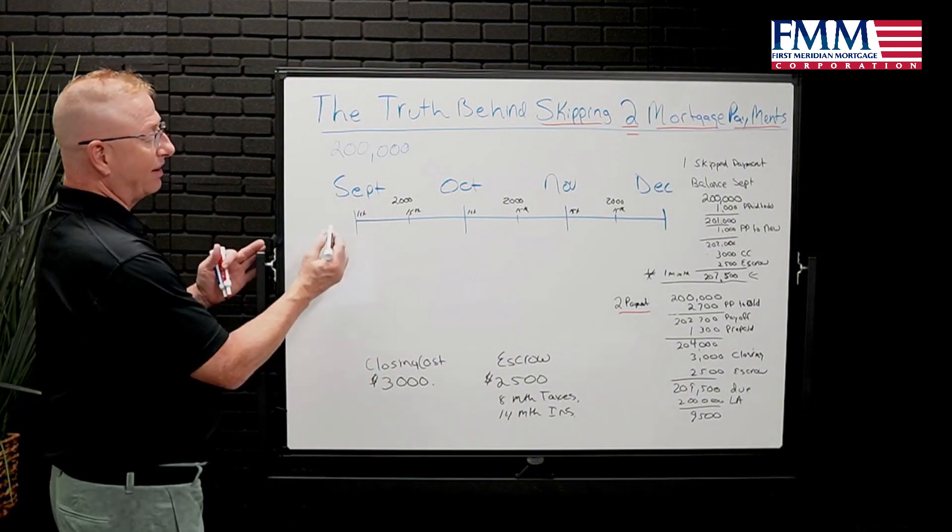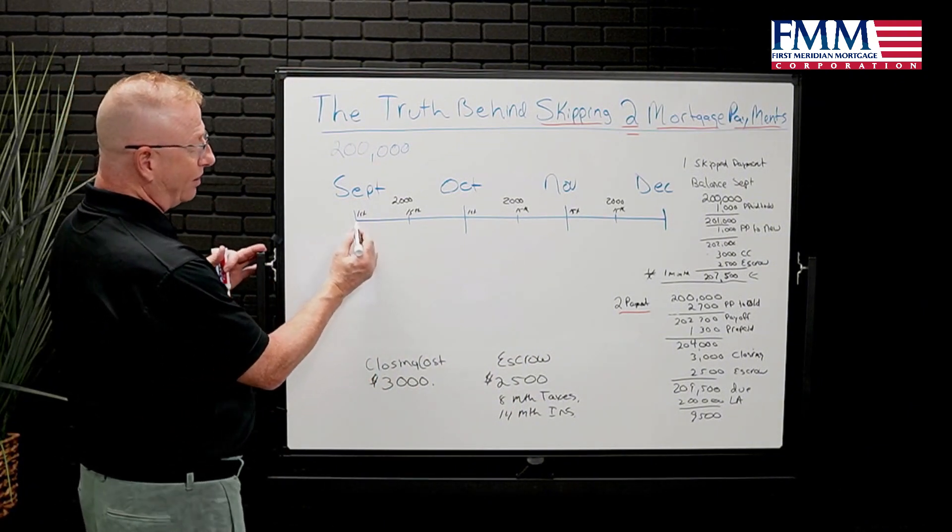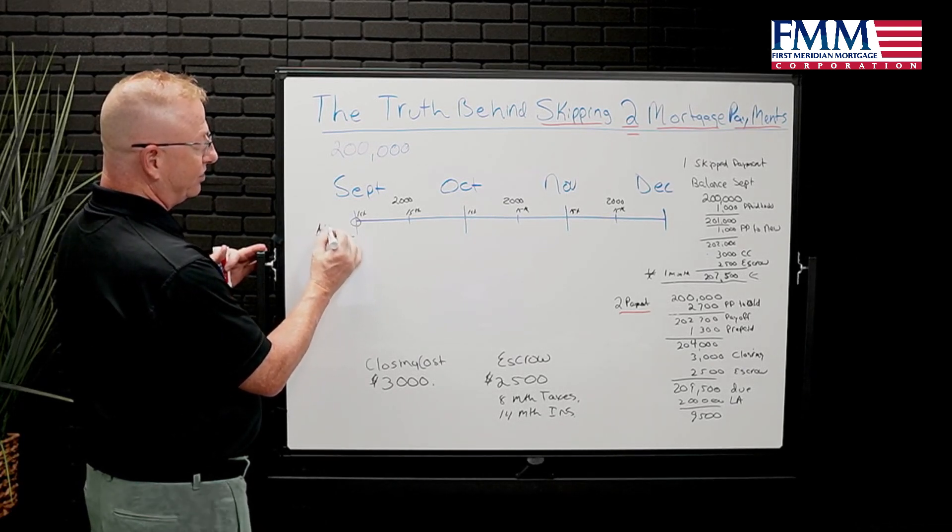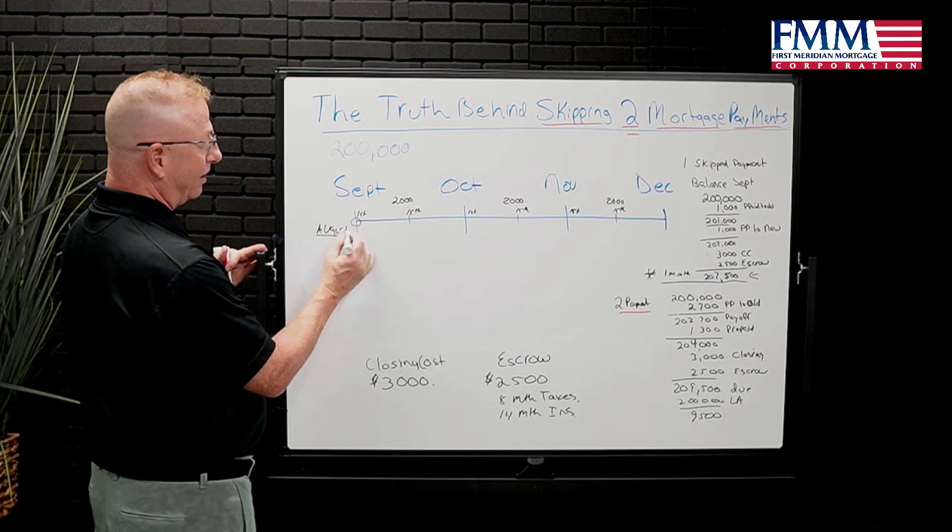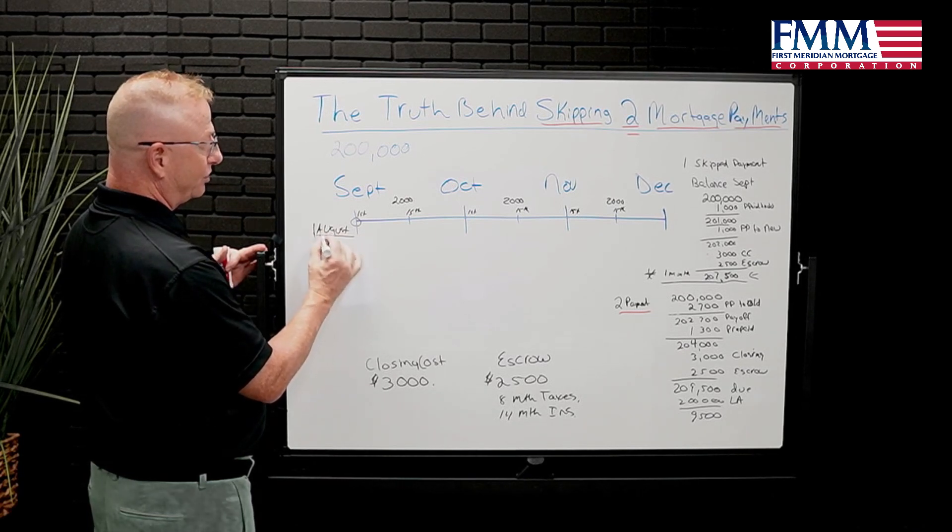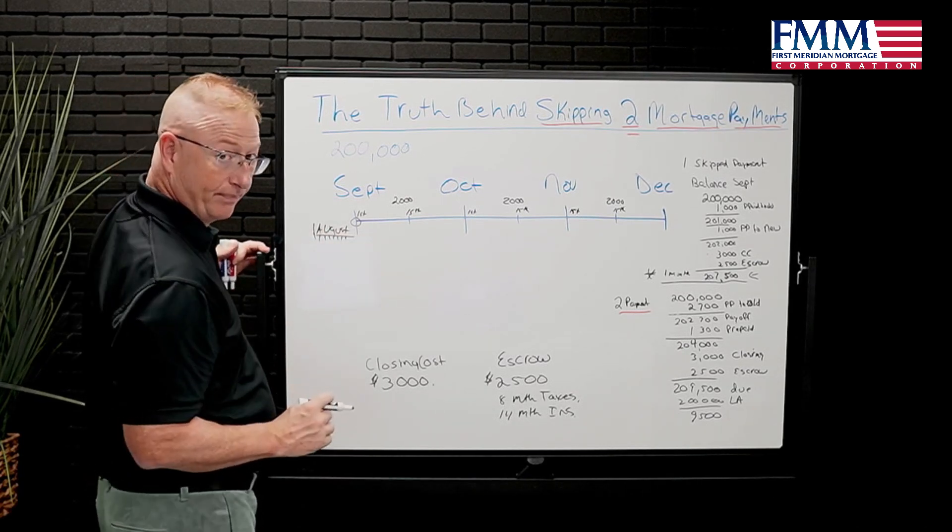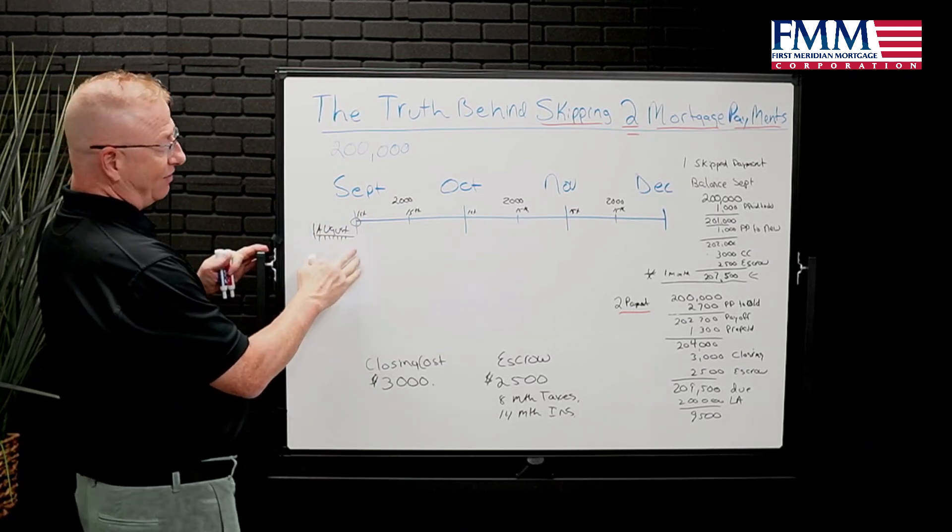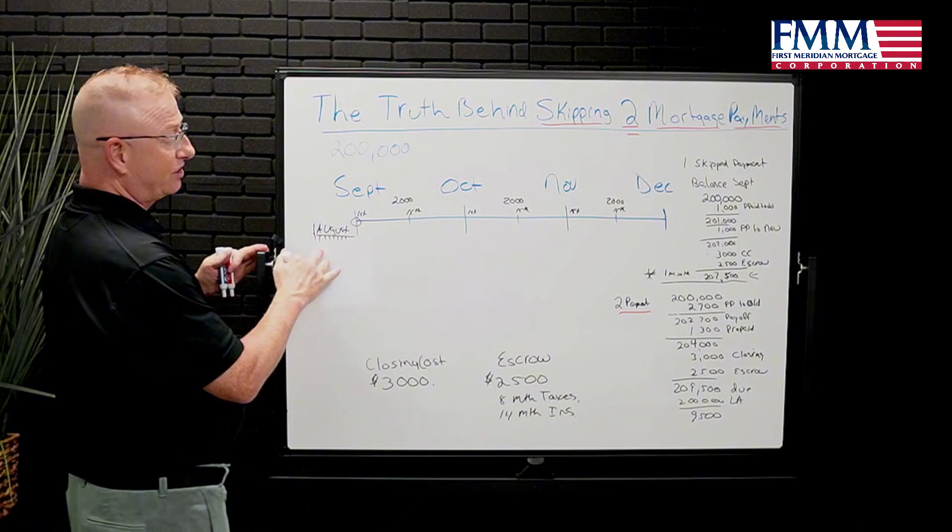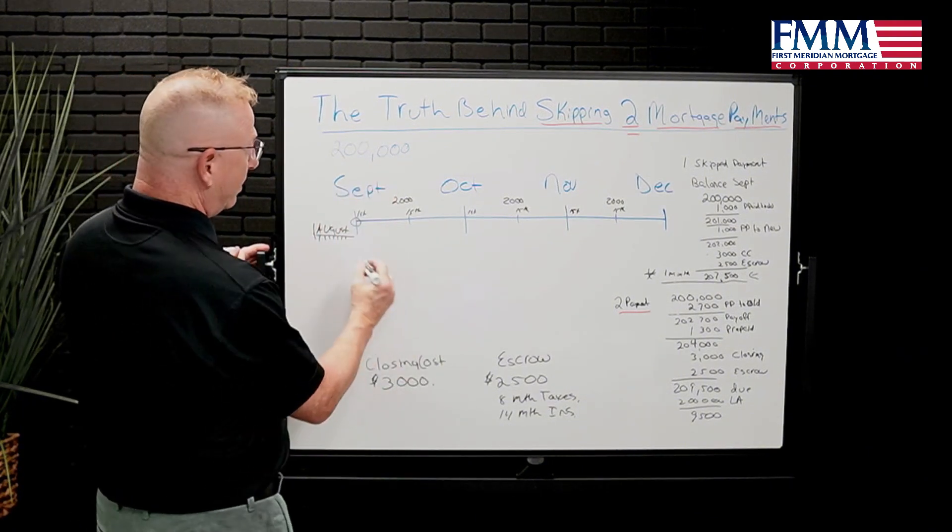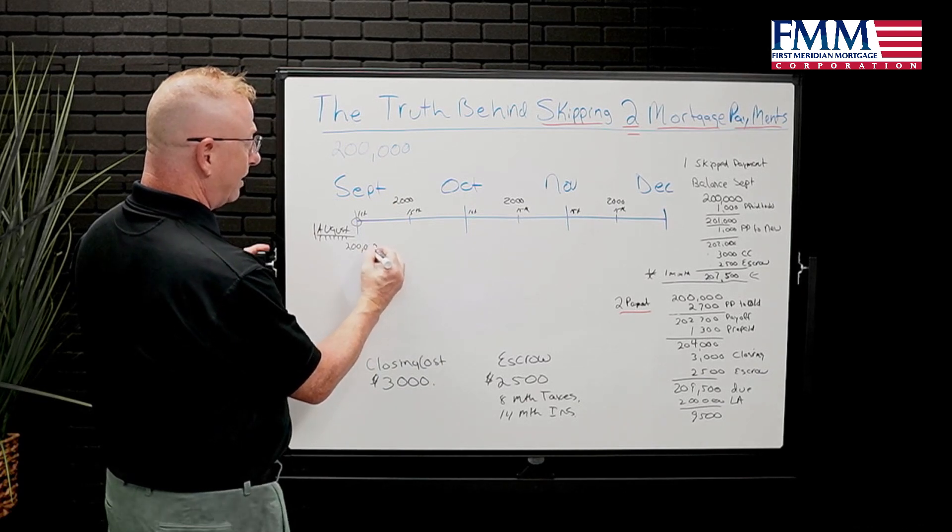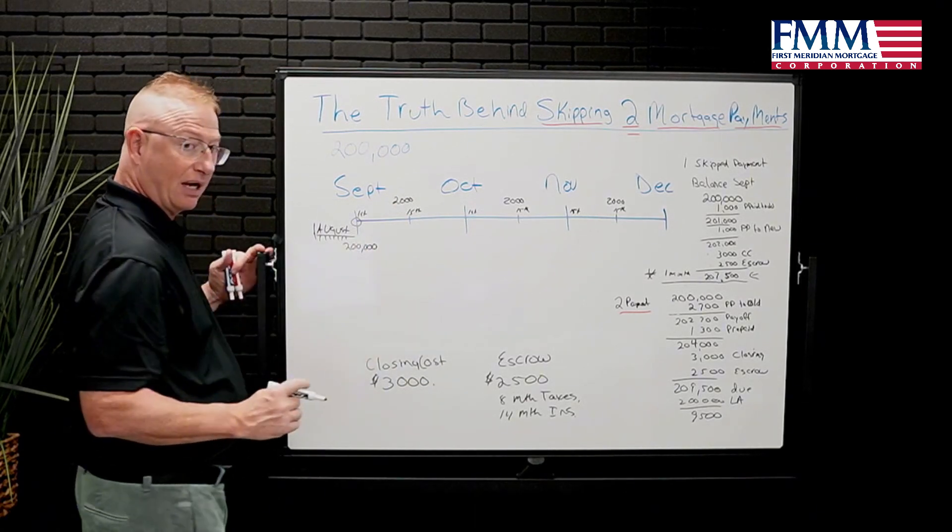Just to reiterate that everybody knows, when you make your September payment here, your interest is in arrear. So you're really making August's interest payment accordingly. So when you make that September payment and you've paid all of the August interest, in this scenario, we're saying your balance on your loan at that point, the principal balance is $200,000.